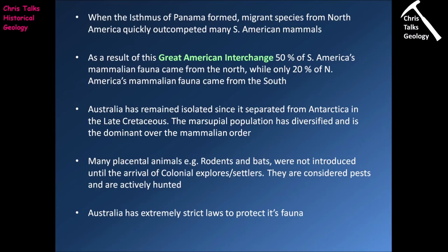Australia has remained isolated throughout the Cenozoic since it separated from Antarctica in the late Cretaceous. This led to the marsupial population diversifying and becoming dominant over placental mammals. Many placental mammals — rodents and bats, for instance — were not introduced into Australia until the arrival of colonial explorers and settlers, making them technically considered pests as non-native species. To protect its marsupial population from suffering the same fate as South America's, Australia has implemented extremely strict laws to protect its fauna.